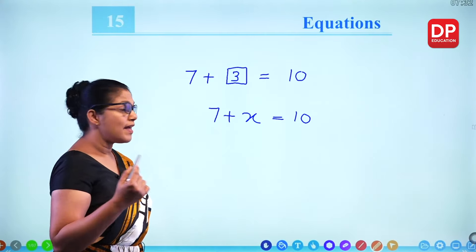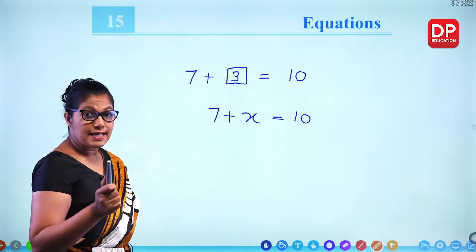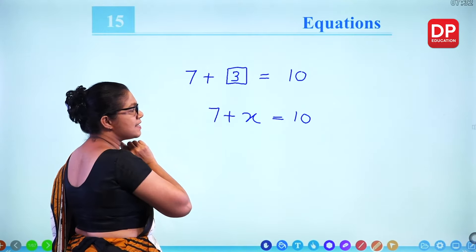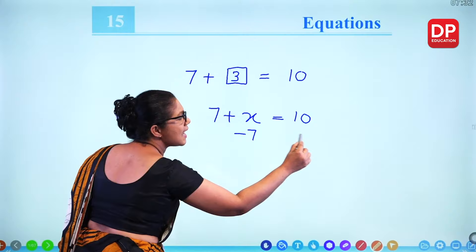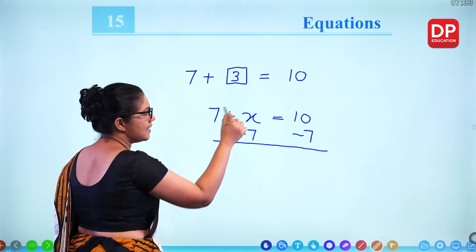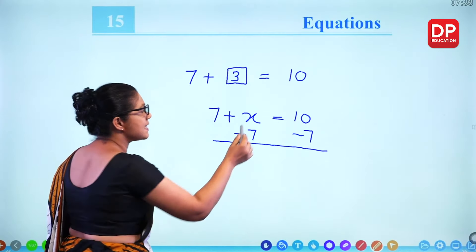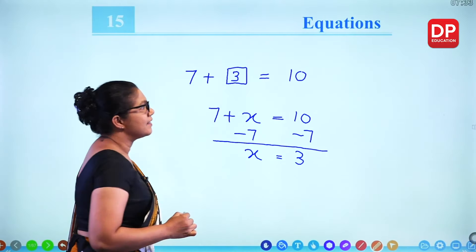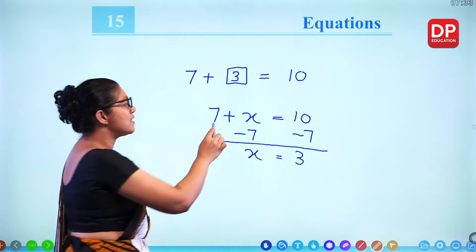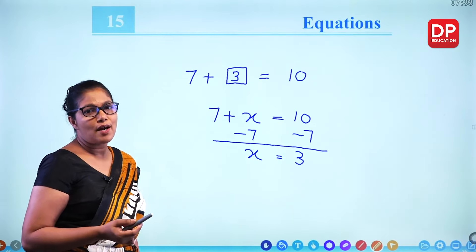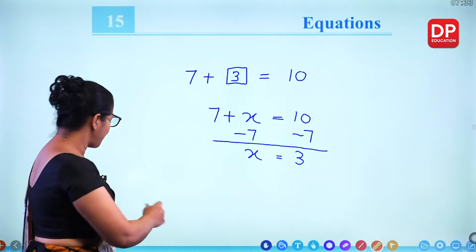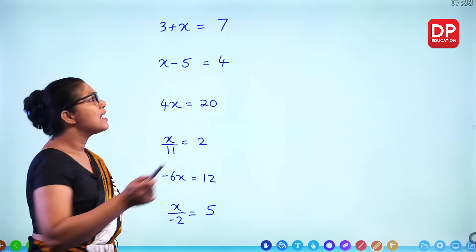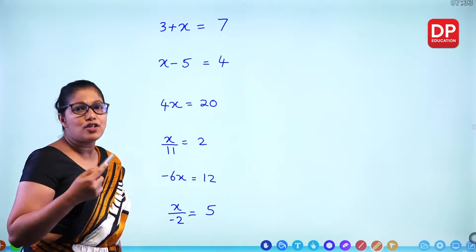So how do we solve it? We did simple equations before in grade 9. We can get rid of this 7 by subtracting 7 from both sides. Then 7 and minus 7 get cancelled out, you get X here. 10 minus 7 you get 3. So the unknown term can be found using this equation. Today we are going to learn about that. Now I will show you a short method — get used to that.